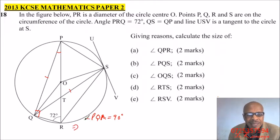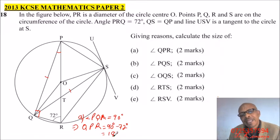Implying that, this is part A of the question. Implying that QPR is equals to 90 minus 72 degrees, which should give you 18 degrees. So there you will be able to get two marks.